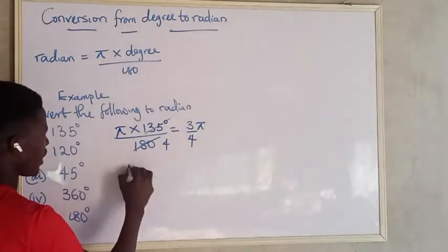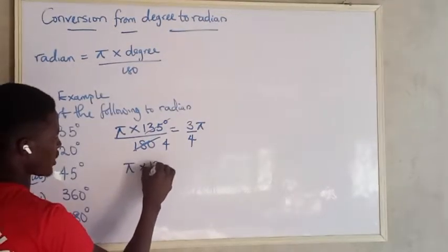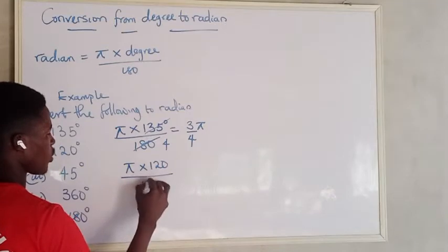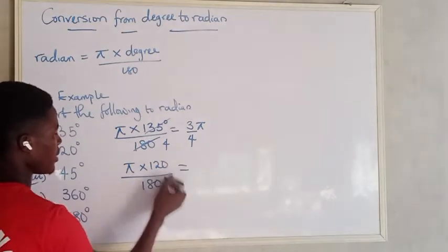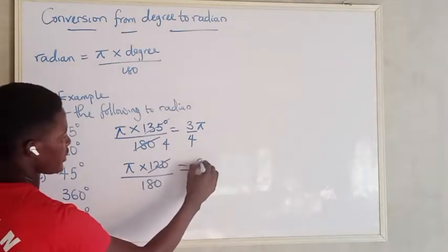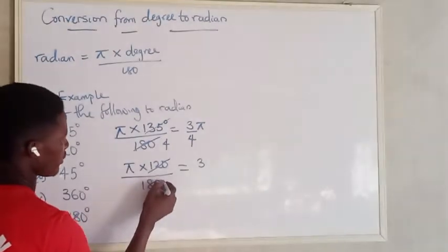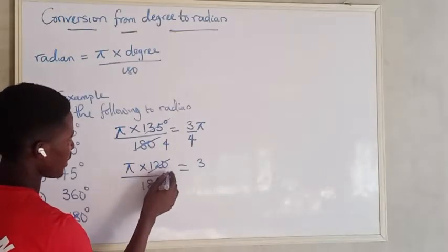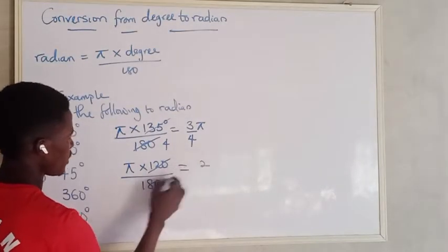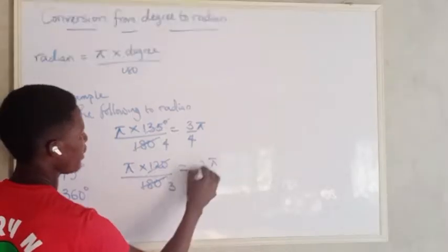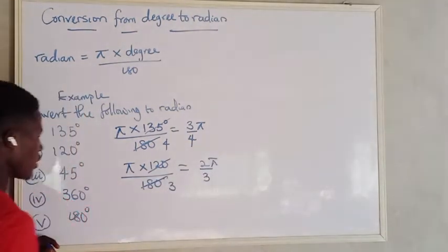Alright, so let's go to the next one. We want 120, so that's pi times 120 all over 180. And that will be 60 here, 60 here. So that's 2 pi all over 3.